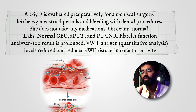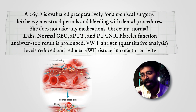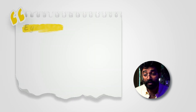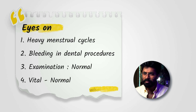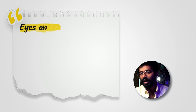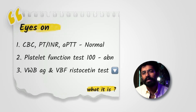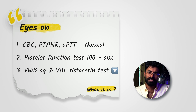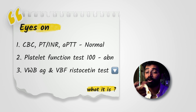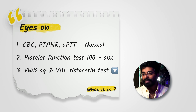This already gives a clear picture, though two to three new terms have appeared which we will discuss. Key clinical pointers are heavy menstrual cycles and bleeding during dental procedures — indicating a bleeding abnormality — while examination and vitals are normal. PT/INR and APTT represent clotting factor defects, and since both are normal, the patient has a completely normal coagulation pathway in both the extrinsic and intrinsic pathways. What remains to assess is platelet function.